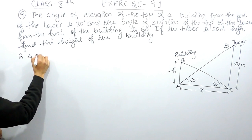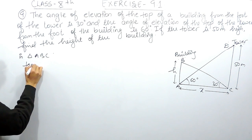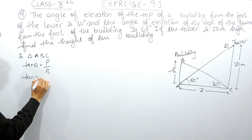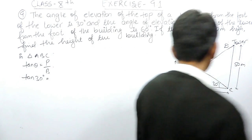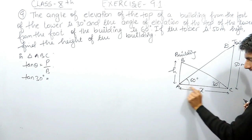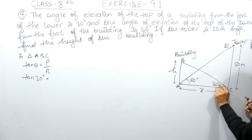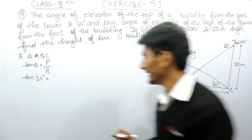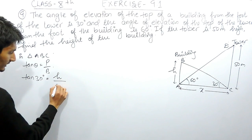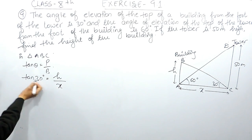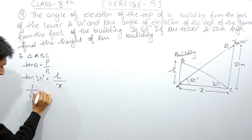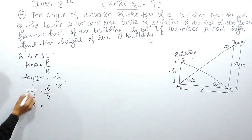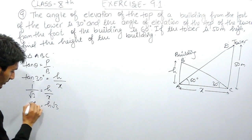In the first (smaller) triangle ABC, tan(θ) equals perpendicular upon base. The side opposite to the 30-degree angle is the perpendicular, supposed as h meters, and the base is x meters. So tan(30°) = h/x. Since tan(30°) = 1/√3, cross-multiplying gives us x = h√3. This is our first equation.